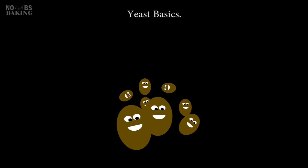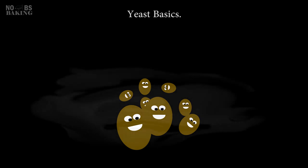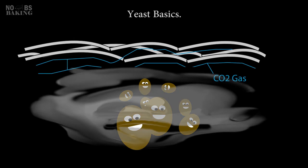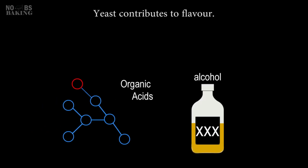Yeast produces carbon dioxide gas during fermentation. This gas gets trapped in the gluten matrix developed in the dough, causing the bread to rise and become light and airy. Fermentation also creates organic acids and alcohol, contributing to complex flavors in bread.